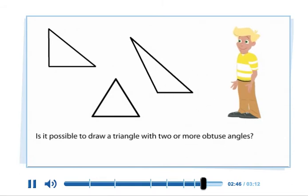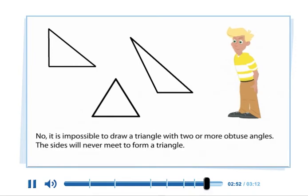Is it possible to draw a triangle with two or more obtuse angles? No, it is impossible to draw a triangle with two or more obtuse angles. The sides will never meet to form a triangle.